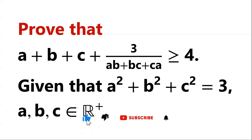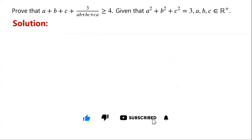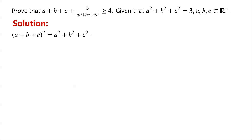We notice that the inequality to be proved contains (a + b + c) and (ab + bc + ca), and the given condition contains a² + b² + c². These algebraic expressions are related through the formula: (a + b + c)² = a² + b² + c² + 2(ab + bc + ca).